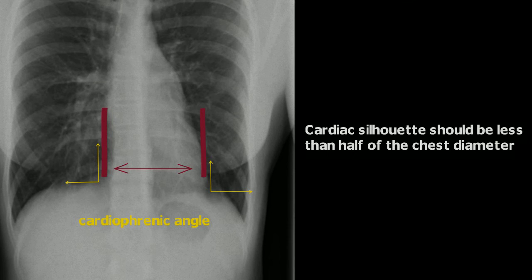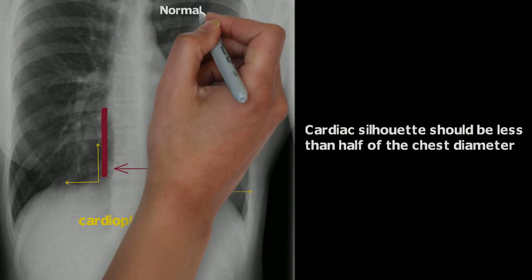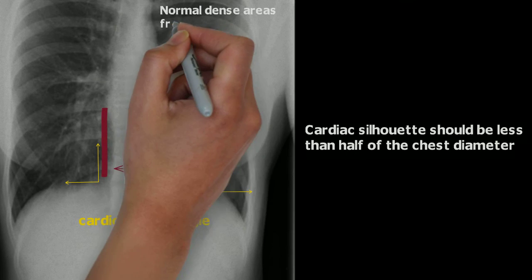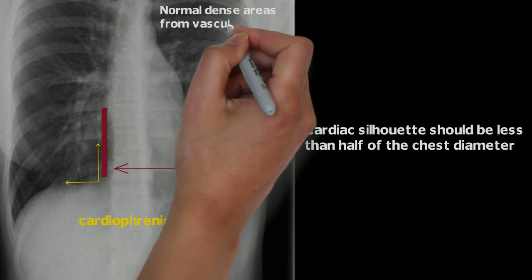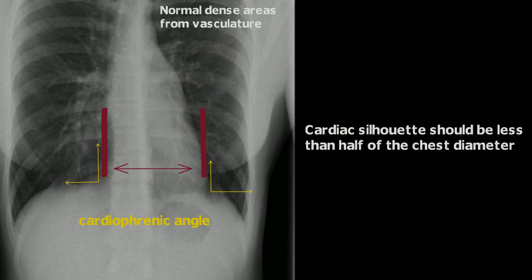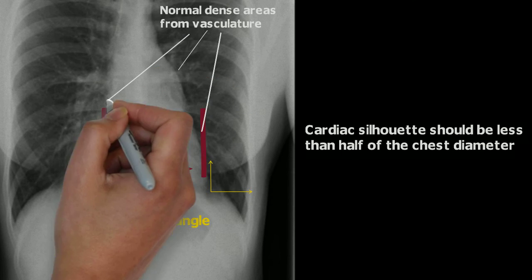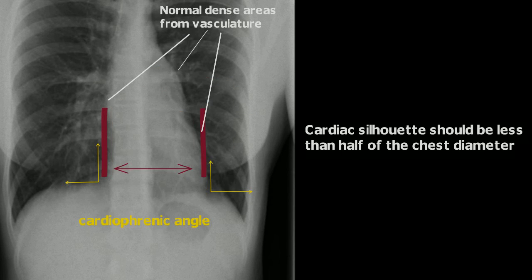Your health history and exams should help you narrow down the differential. As you review the rest of the cardiac silhouette edges, you'll see prominent, dense, lumpy areas. These are normal and represent different parts of the cardiac anatomy. Although not visible in this picture, it's common to see this on the right side as well, from the right atrium and ventricle.